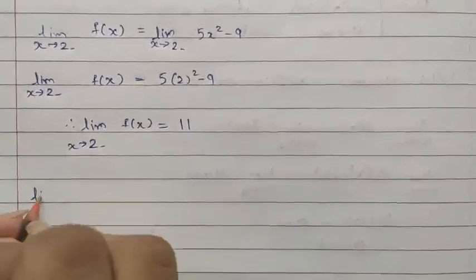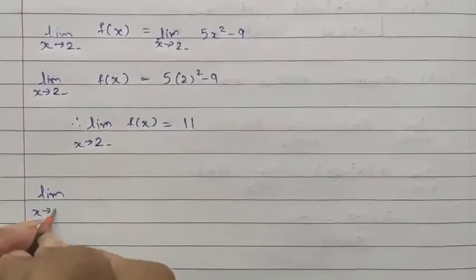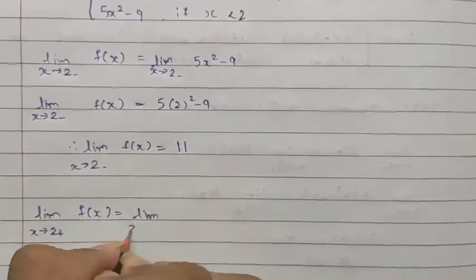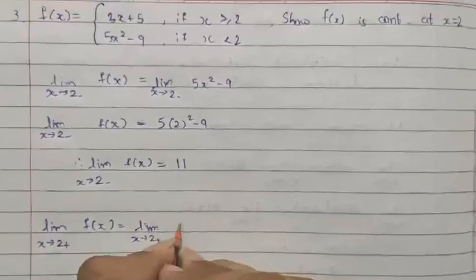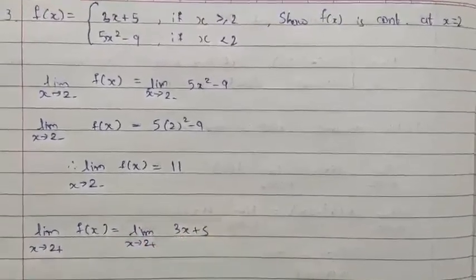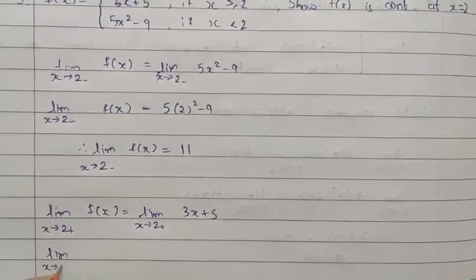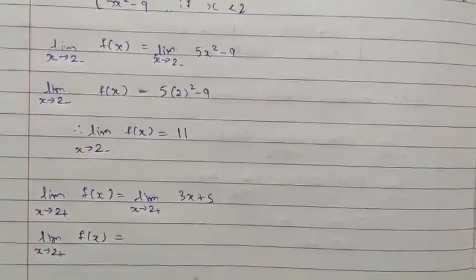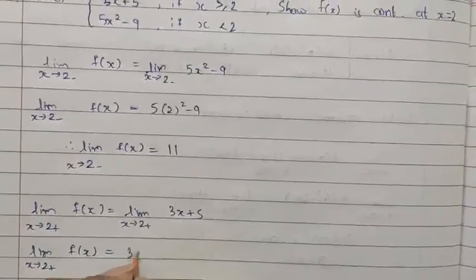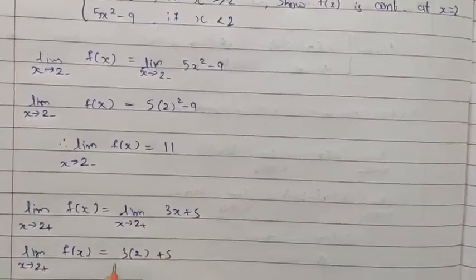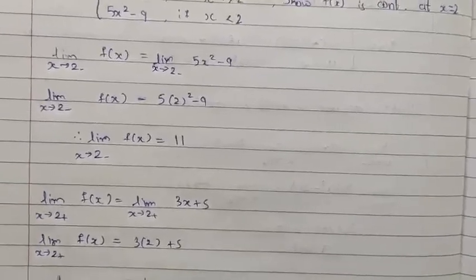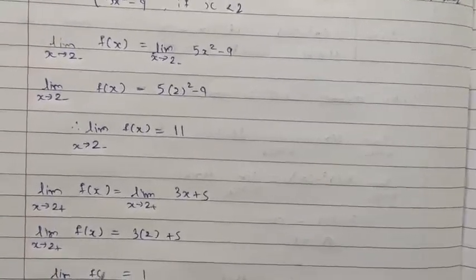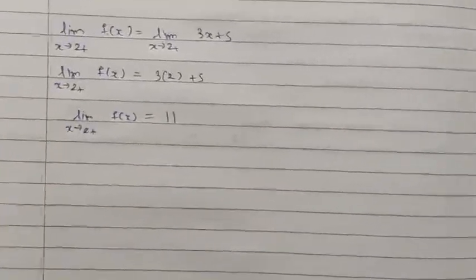The limit as x tends to 2 plus of f(x) equals the limit as x tends to 2 plus of 3x + 5, which equals 3·2 + 5 = 6 + 5 = 11. Therefore, the limit as x tends to 2 plus of f(x) equals 11.